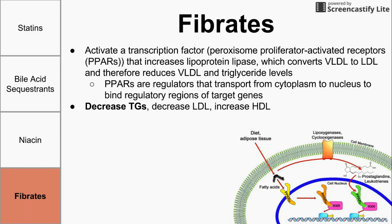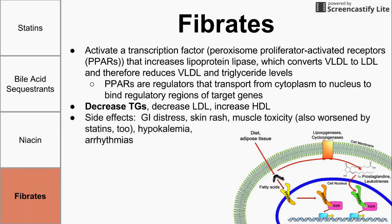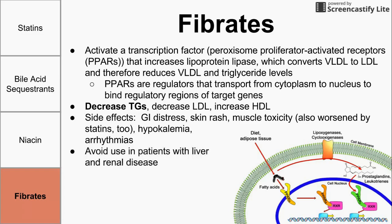The main reason to use fibrates is to decrease triglycerides. Side effects include GI distress, skin rash, and mild muscle toxicity. Since statins also cause muscle toxicity, these two drugs together can have a combinatory effect and seriously damage muscles. Fibrates also cause hypokalemia and could cause arrhythmias. You want to avoid fibrates in patients with liver and renal disease due to the damage they can cause to those organs. A couple of common fibrate names are listed at the bottom.